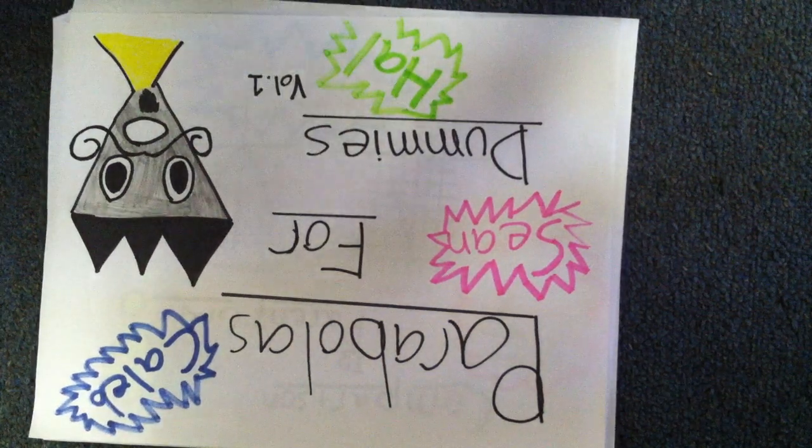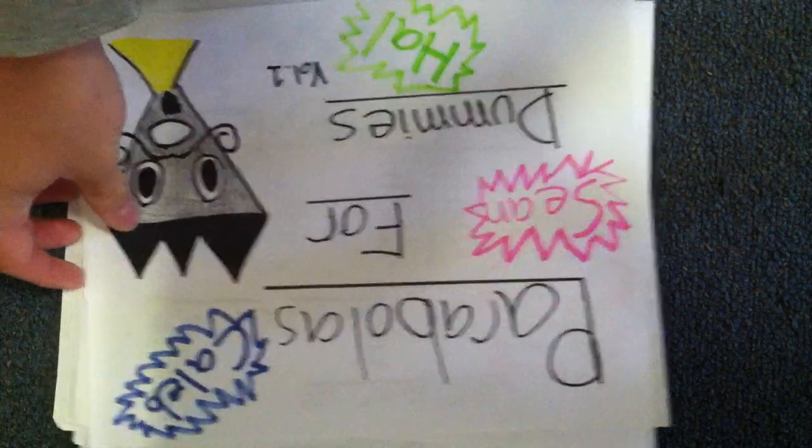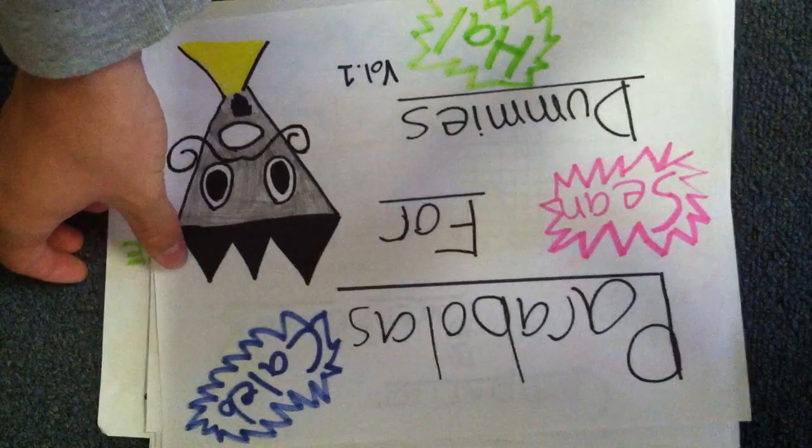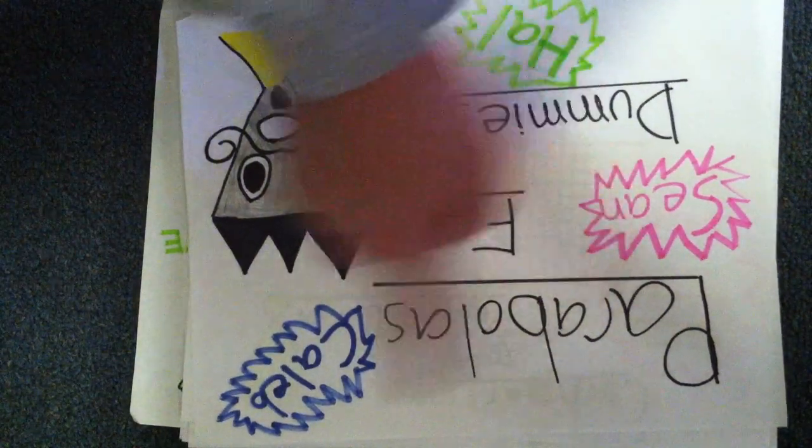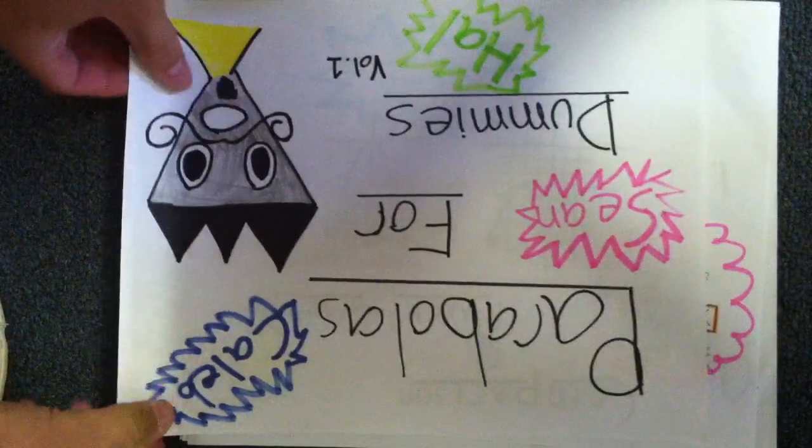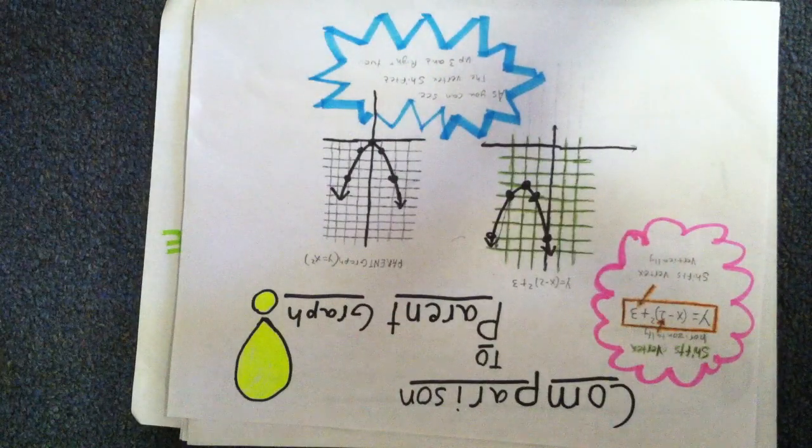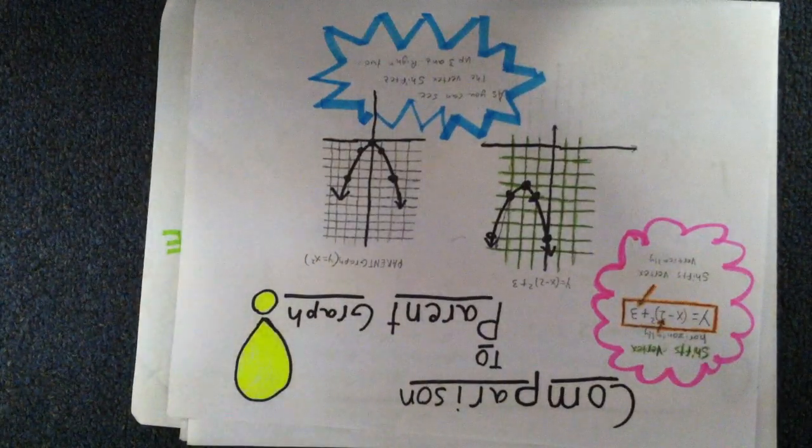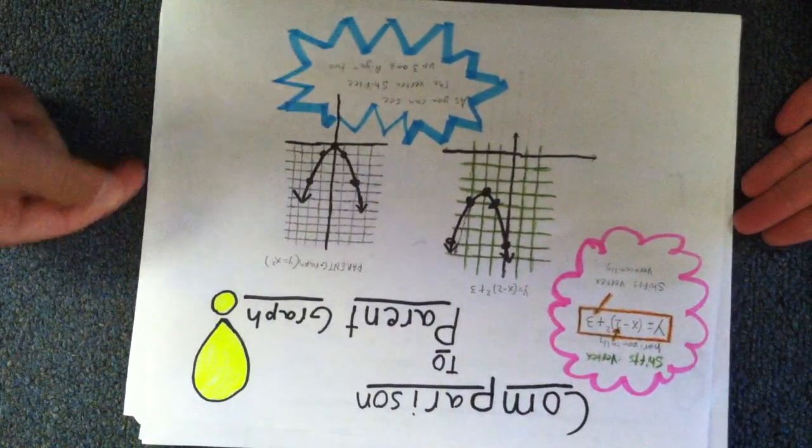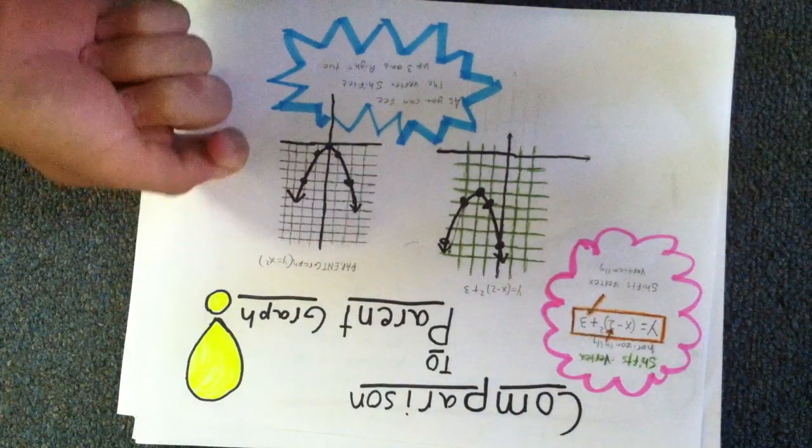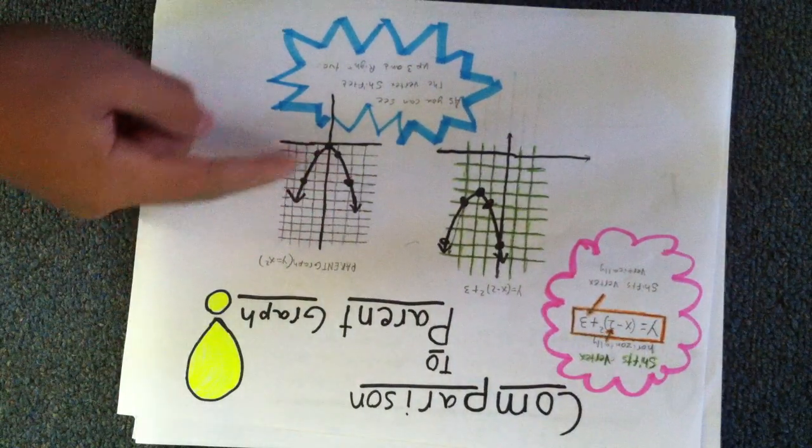This is Parabolas for Dummies by Hal, Sean, and Caleb. Comparison to a parent graph. The parent graph of this function, y equals x squared, is graphed like this right here.